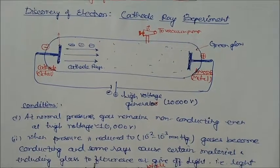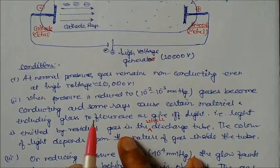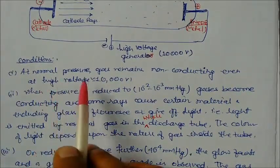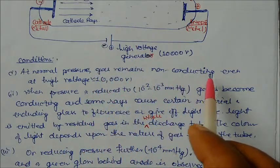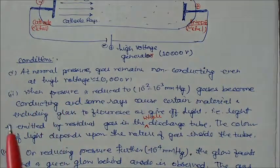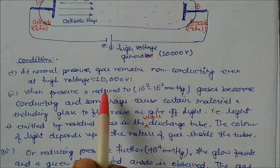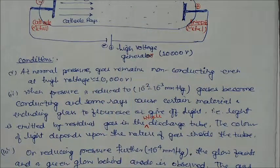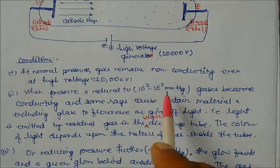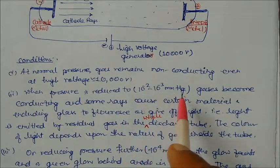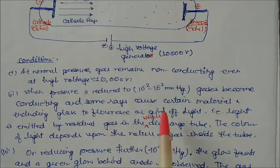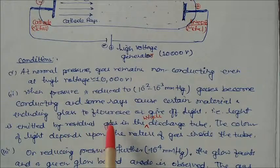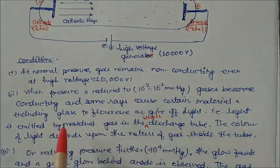The conditions prevailing at that time: at normal atmospheric pressure, gas remains non-conducting. Air is a bad conductor of electricity, even at a high voltage of 10,000 volts. But when pressure is reduced to 10⁻² to 10⁻³ millimeters of mercury — very low pressure — the gas becomes conducting, and some rays cause certain materials including glass to fluoresce and give off light.